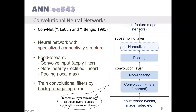In summary, CNN is a feed-forward network. It convolves the input — that means applying a filter — then applies a non-linearity, usually a rectified linear unit. Then we have pooling, which finds the local maximum. Convolutional filters are trained by backpropagating the error, as in the backpropagation algorithm.